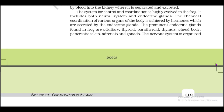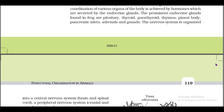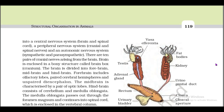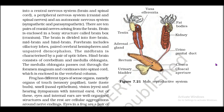The system for control and coordination is highly evolved in the frog. It includes both the neural system and endocrine glands. The chemical coordination of various organs of the body is achieved by hormones secreted by the endocrine glands. The prominent endocrine glands found in the frog are the pituitary, thyroid, parathyroid, thymus, pineal body, pancreatic islets, adrenals, and gonads. The nervous system is organized into a central nervous system (brain and spinal cord), a peripheral nervous system (cranial and spinal nerves), and an autonomic nervous system (sympathetic and parasympathetic). There are 10 pairs of cranial nerves arising from the brain. The brain is enclosed in a bony structure called the brain box (cranium). The brain is divided into forebrain, midbrain, and hindbrain. Forebrain includes olfactory lobes, paired cerebral hemispheres, and unpaired diencephalon. The midbrain is characterized by a pair of optic lobes. The hindbrain consists of the cerebellum and medulla oblongata. The medulla oblongata passes out through the foramen magnum and continues into the spinal cord, which is enclosed in the vertebral column.